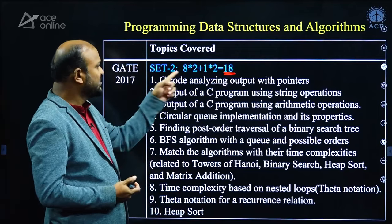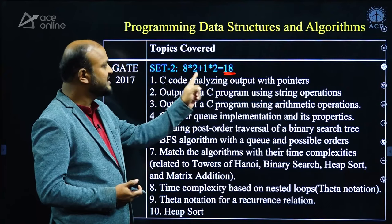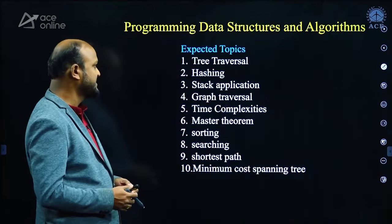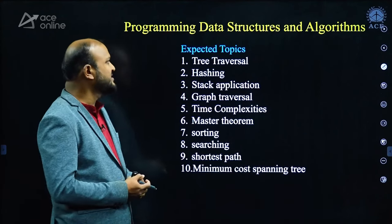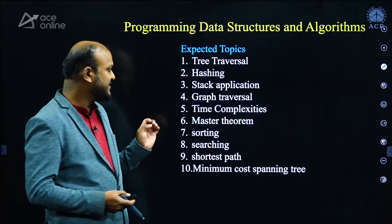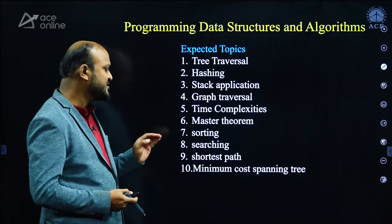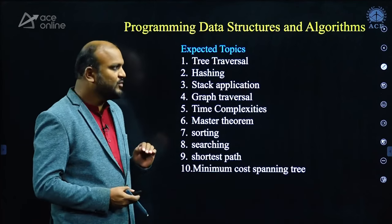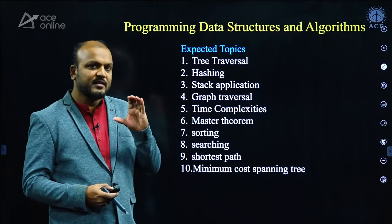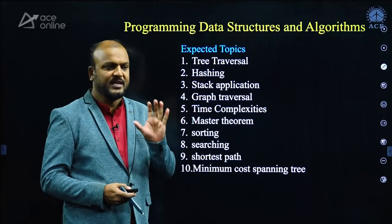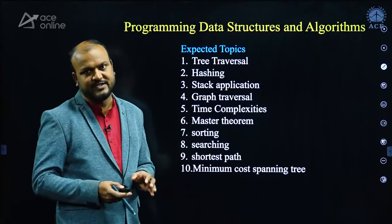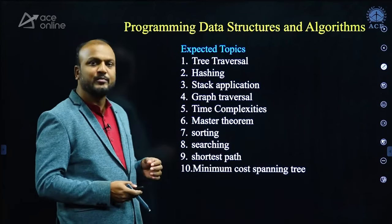In Set 2, the 18 marks consisted of eight 2-mark questions and two 1-mark questions. The most expected topics from PDA are tree traversals, hashing, stack applications, graph traversal, time complexities, master theorem, sorting, searching, shortest path, and minimum cost spanning trees. Comparing the 2009 and 2017 papers, only regular kinds of questions came in PDA — no unusual untapped area questions — so focus on these conventional topics.